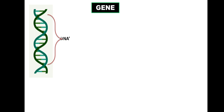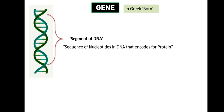In the most simple words, a gene is a segment of DNA with a specific function. The word 'gene' came from the Greek word 'genus' which means 'born.' More specifically, a gene is a sequence of nucleotides in DNA that codes for a protein — either a structural protein or a functional protein such as an enzyme. Only such a sequence can be called a gene.